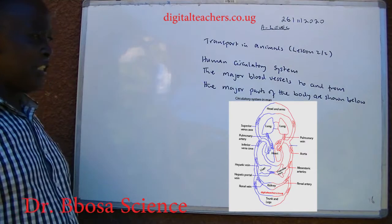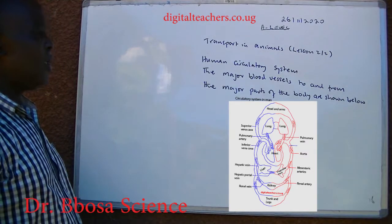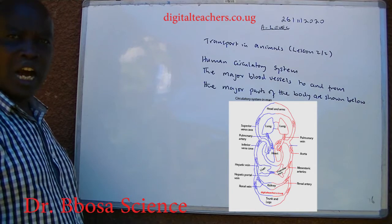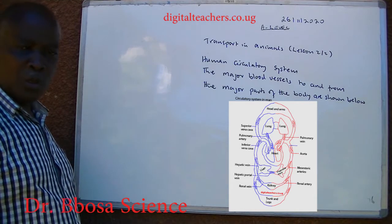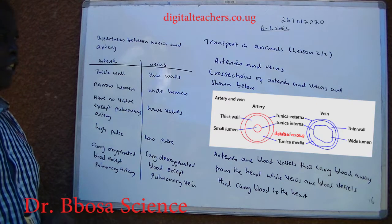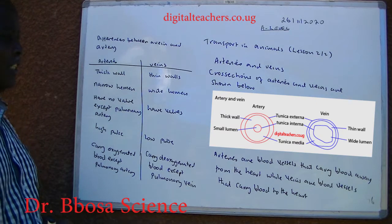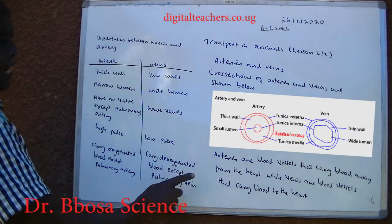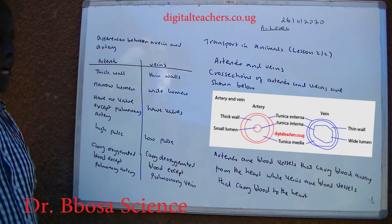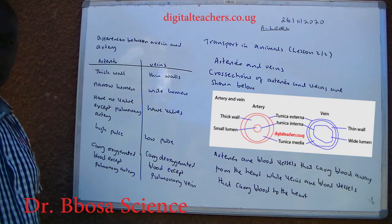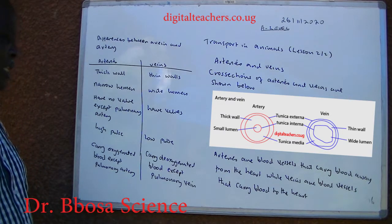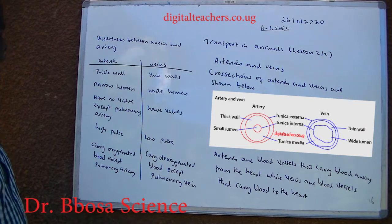The major blood vessels through the major parts of the body are shown below — arteries and veins. Arteries are blood vessels that carry blood away from the heart, while veins are blood vessels that carry blood to the heart.